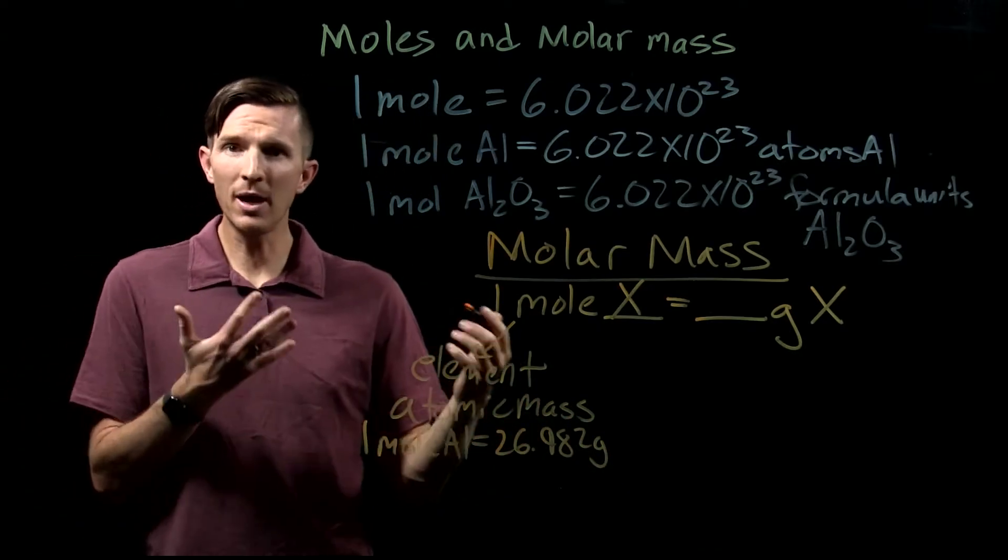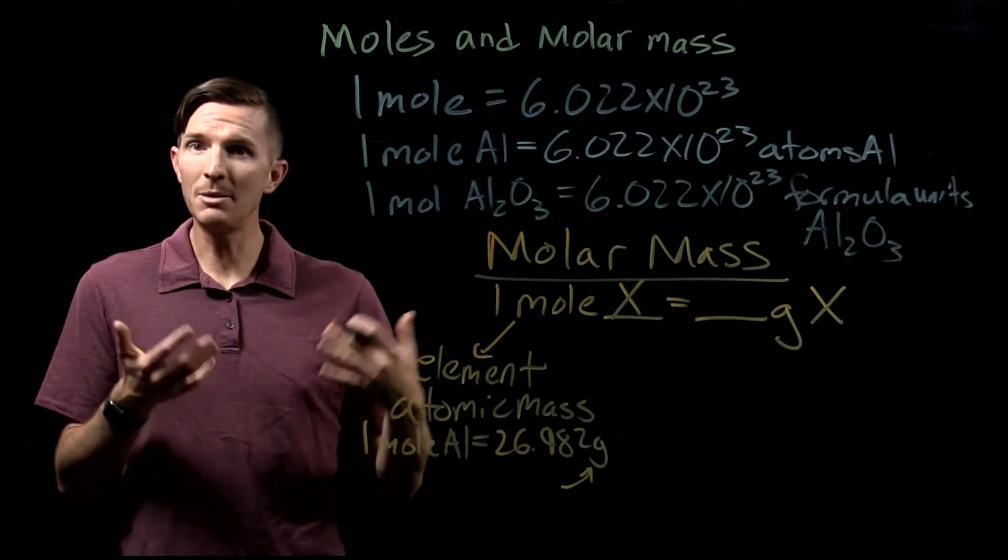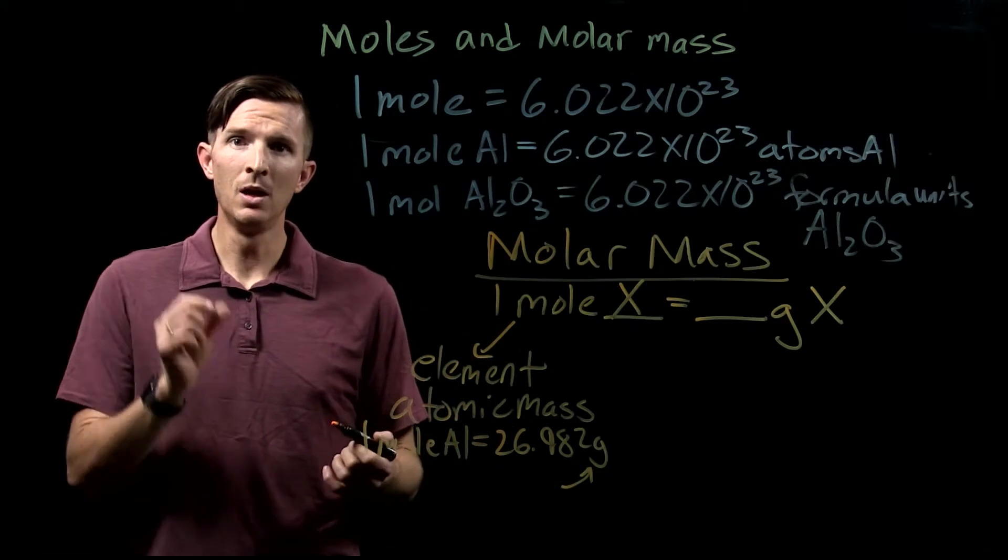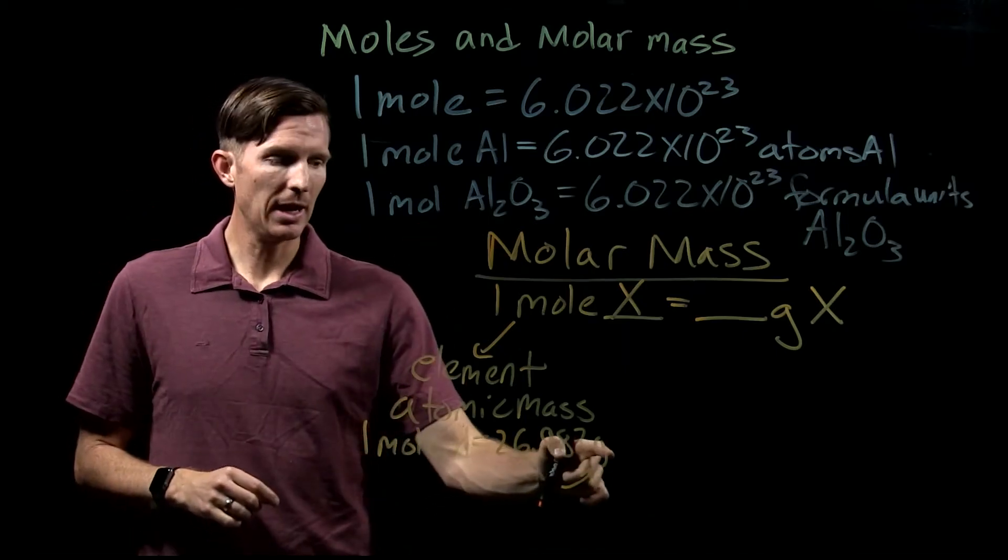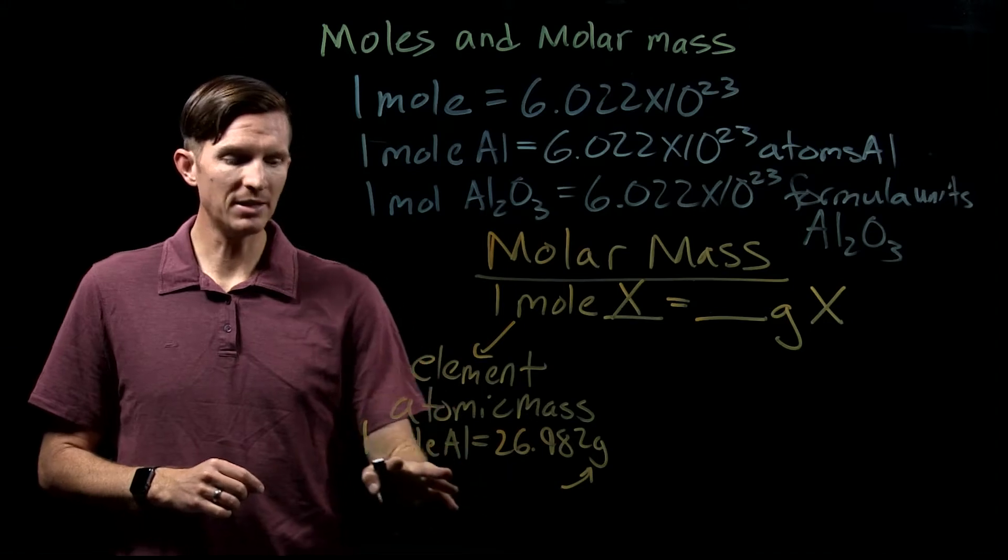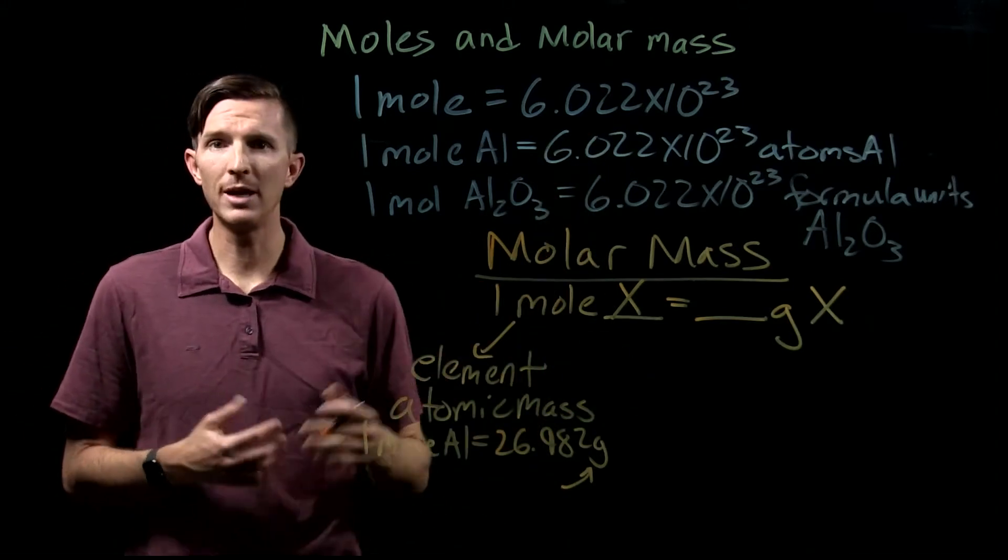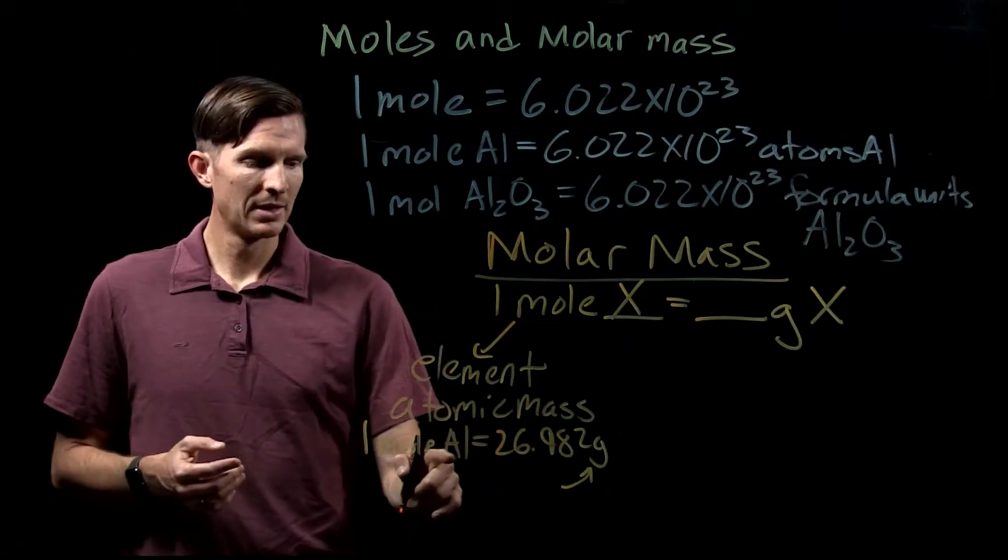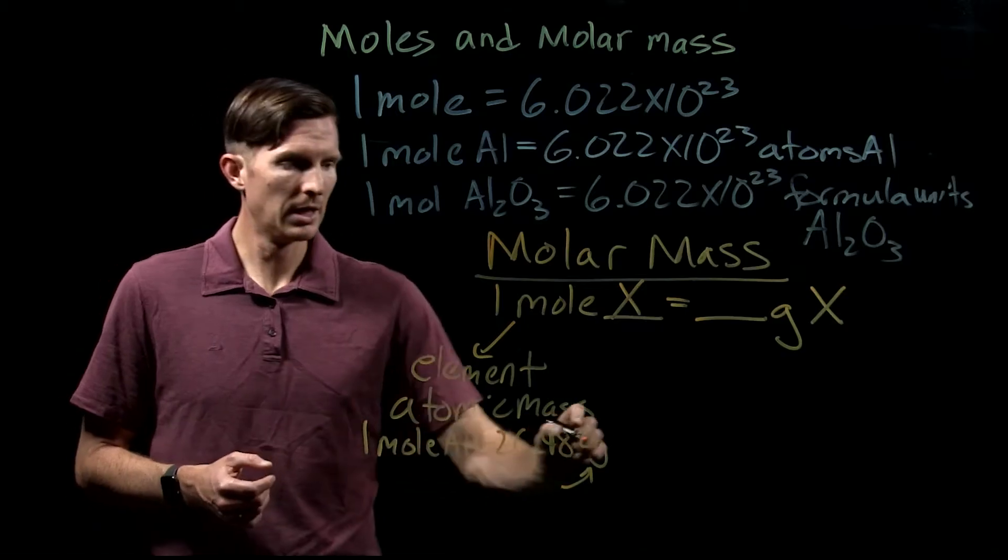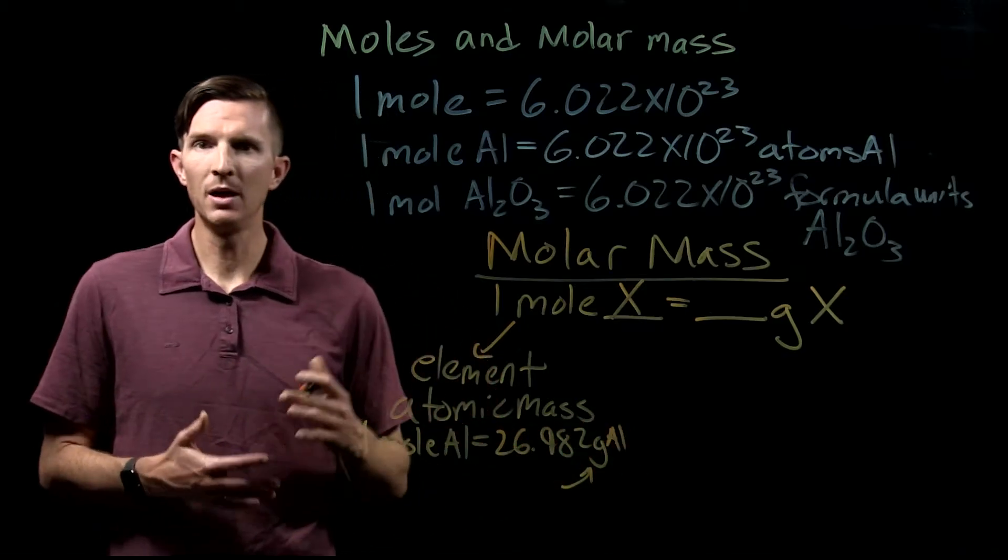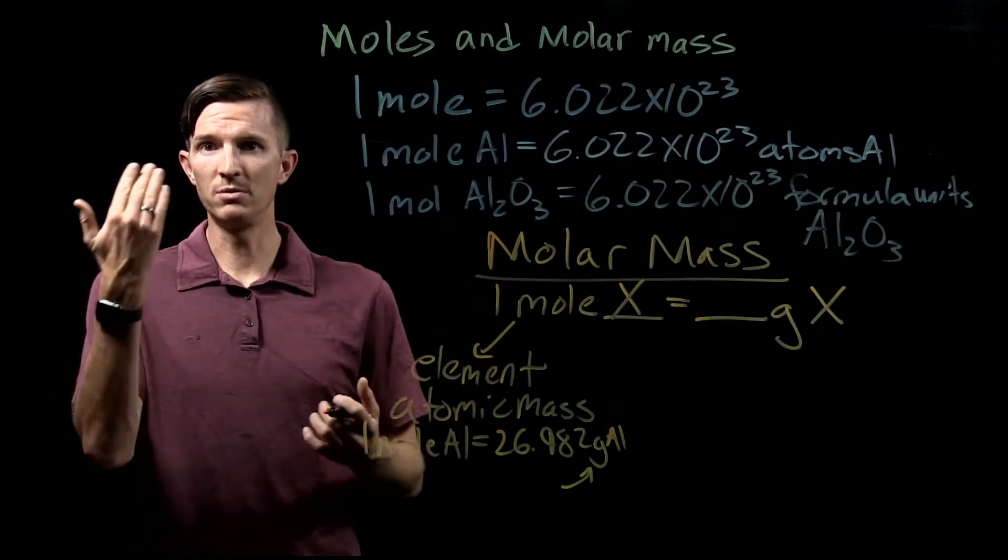If I go to the periodic table, we've talked about the atomic masses in AMU. One atom of aluminum is 26.982 AMU of aluminum. If I scale that up to a mole, 6.022 times 10 to the 23rd atoms of aluminum, I'm going to have 26.982 grams of aluminum.